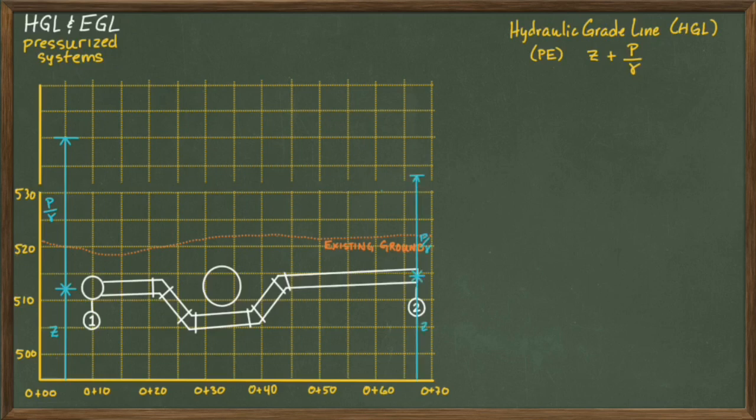At the other end, we label the same. I draw similar lines representing the elevation and pressure at two, but this time the Z plus P over gamma is less than at point one. And that is due to, big surprise coming, friction.